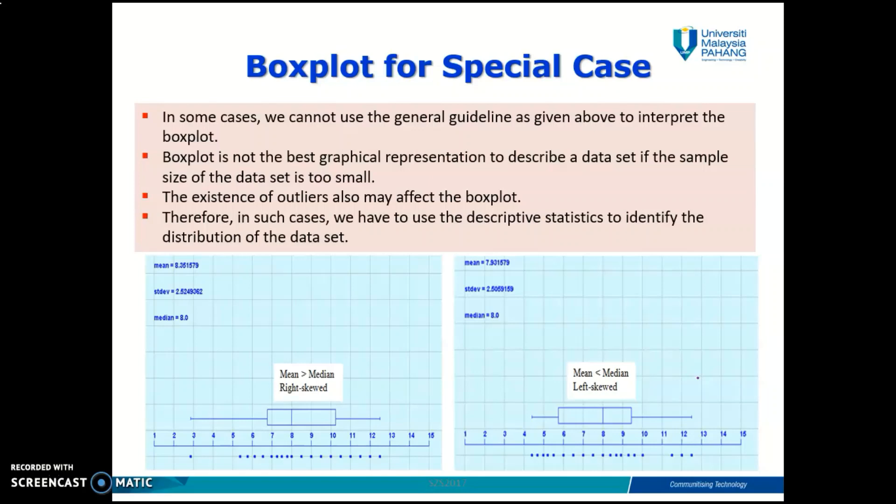The existence of outliers may also affect the boxplot. Therefore, in such cases, we have to use descriptive statistics to identify the distribution of the data set. When I say descriptive statistics, I meant by mean value, standard deviation value, and median value.